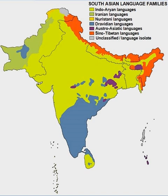The Prakrits were gradually transformed into Apabhraṃsas, which were used until about the 13th century CE. The term Apabhramsa, meaning 'fallen away', refers to the dialects of Northern India before the rise of modern Northern Indian languages, and implies a corrupt or non-standard language. A significant amount of Apabhramsa literature has been found in Jain libraries. While Amir Khusro and Kabir were writing in a language quite similar to modern Hindi-Urdu, many poets, especially in regions still ruled by Hindu kings, continued to write in Apabhramsa.